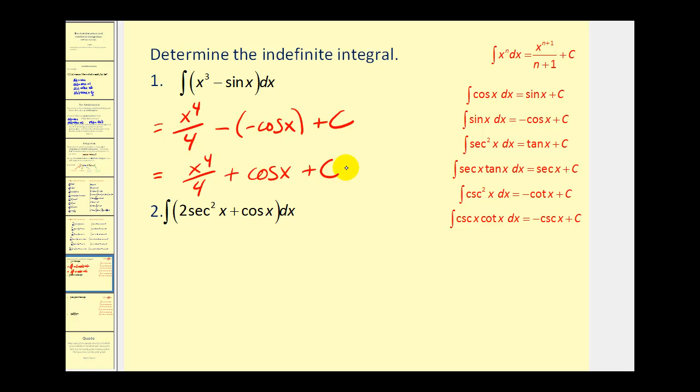Notice we applied two different integration formulas. Both had a plus c, but there's no reason to put plus c twice because if we add two constants, we just get another constant. So it's common practice just to put one plus c at the end of our anti-derivative.